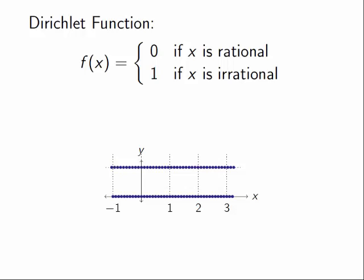If I try to follow the rational numbers in, the function looks like it's always 0. If I try to follow the irrational numbers closer and closer to x equals 2, the function looks like it's always 1.